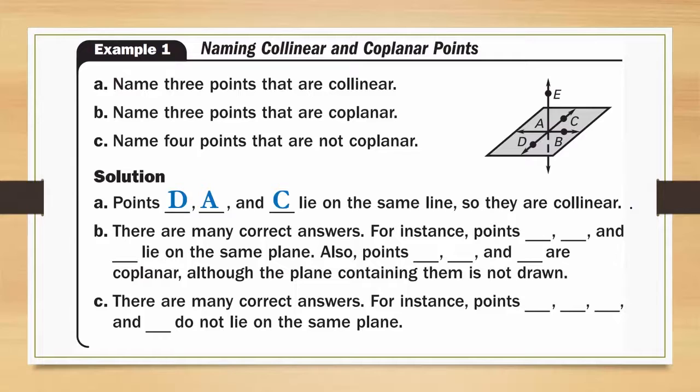B, name three points that are coplanar. Remember coplanar means that they are on the same plane. There are many correct answers. For instance, points D, A, and B lie on the same plane. Also, points B, A, and E are coplanar, although the plane containing them is not drawn.